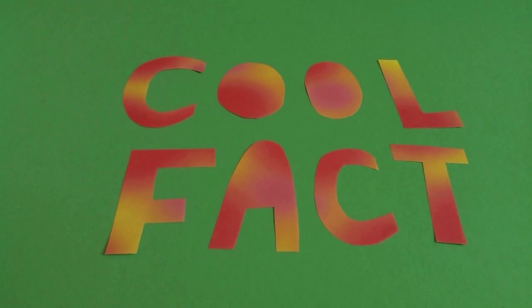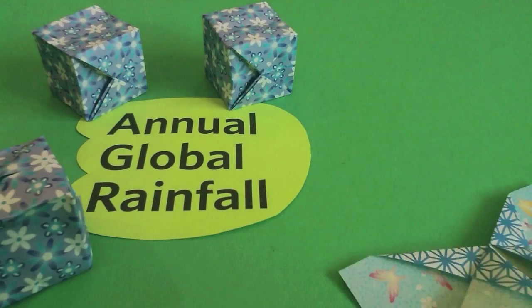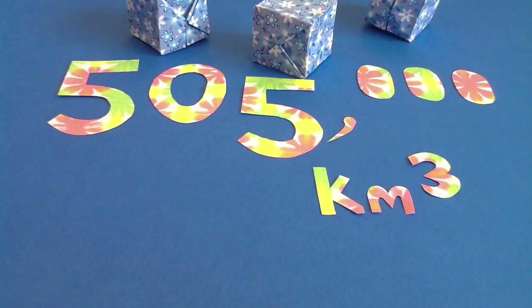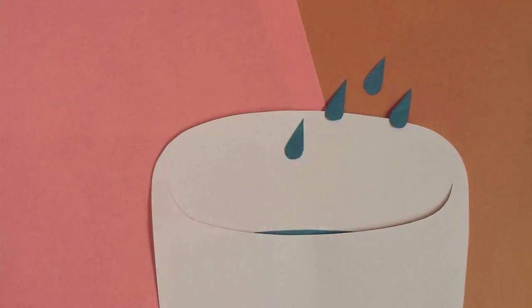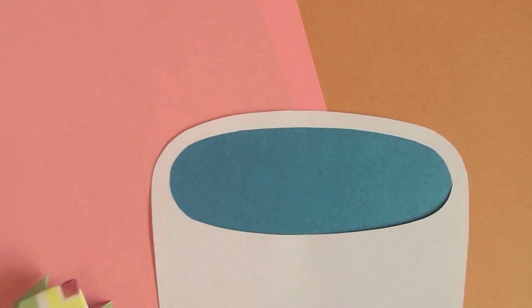Here's a cool fact. The approximate annual global rainfall is 505,000 cubic kilometres. That's enough to fill, well, lots of bathtubs.